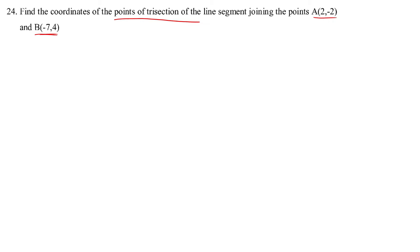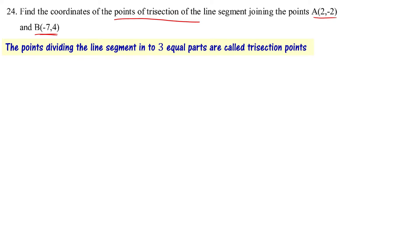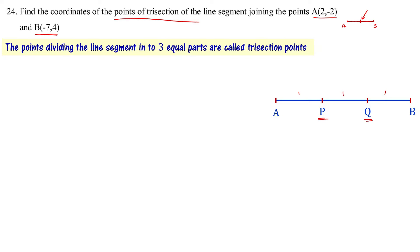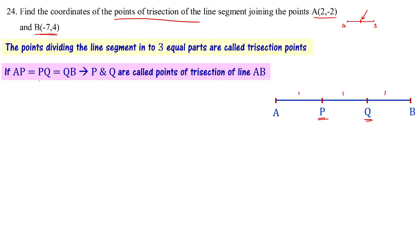Points of trisection — the points dividing the line segment into 3 equal parts are called trisection points. For example, if we have line AB and two points P and Q divide it into 3 equal parts, then if AP = PQ = QB, we can say that P and Q are trisection points for line segment AB.